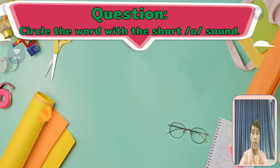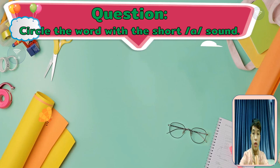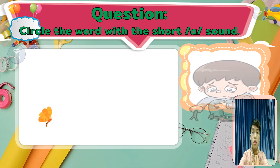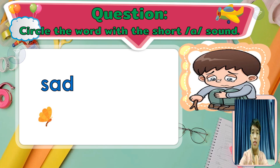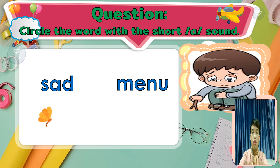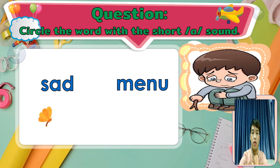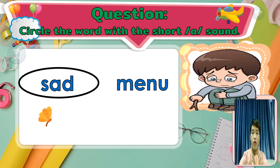Our next picture is 'sad' and the words are 'sad' and 'menu.' Again, menu. Which one has the short A sound? Very good — sad. Good job students.